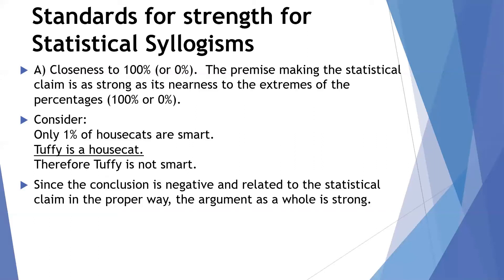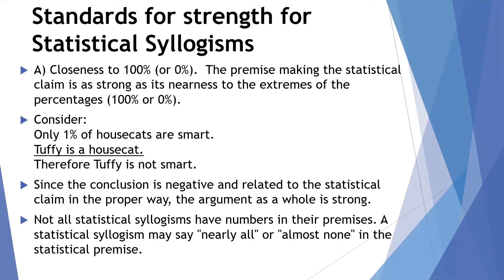Since the conclusion is negative — Tuffy is not smart — and it's related to the statistical claim in the proper way, only 1%, the argument as a whole is strong. When statistical claims near 50% are used, a statistical syllogism becomes nearly worthless — very weak. There are no precise cutoffs, but near 90% or above, or around 10% or below, is what you need to make a good statistical syllogism. Ranges of 30% to 70% are not going to be very good. Not all statistical syllogisms have numbers in their premises — phrases like 'nearly all' or 'almost none' can still yield strong arguments.